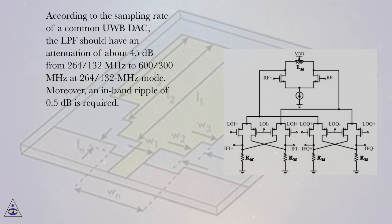According to the sampling rate of a common UWB DAC, the LPF should have an attenuation of about 45 dB from 264-130 MHz to 600-300 MHz at 264-130 MHz mode.